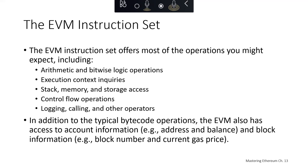In addition to all of these standard bytecode operations, because we're talking about a blockchain virtual machine, the EVM also offers access to account information like your address and the balance associated with that address, as well as block information like block number, current gas price, and so on.